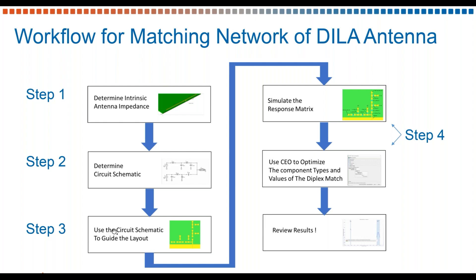Then we'll go to step three where we'll use the schematic we designed to guide our implementation of the matching network onto the PCB. Here we'll include our copper traces, our vias, and transmission lines. We'll place them on the board and run a response matrix to get simulation results of the antenna with the matching network topology included.